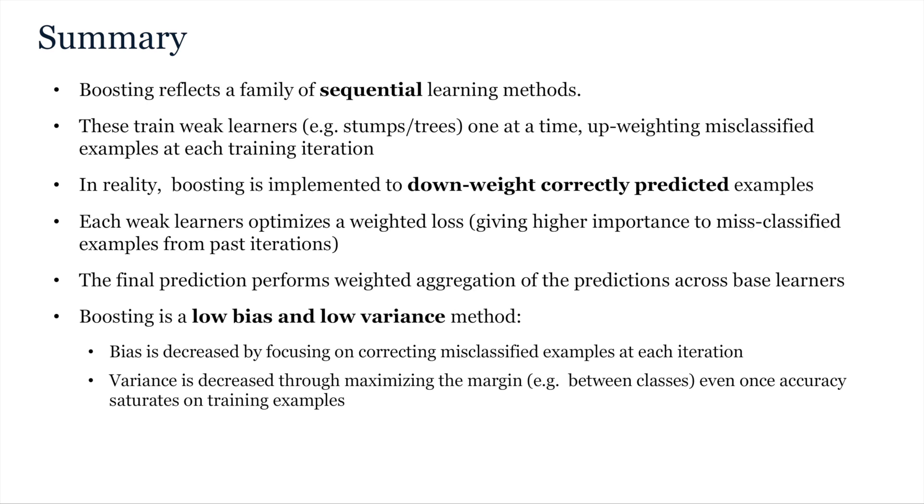So, in conclusion, the important difference between boosting and bagging or forests is that in boosting, weak learners are trained not in parallel, but one after another, where this process acts to reduce model bias by increasingly focusing on misclassified examples at each subsequent iteration. Noting in terms of implementation, misclassified examples are up-weighted indirectly with the algorithm actually implementing reduction of the weights of correctly classified examples. This then results in misclassified examples receiving up-weighted probabilities for estimation of the loss in the next round. The final prediction for each test and trained variable is then estimated through weighted aggregation, giving higher weight to the weak learners in the ensemble which perform best. Collectively then, this works to reduce bias and variance, where bias is decreased by focusing on correcting misclassified examples at each iteration, and variance is decreased by maximizing the margin, even once accuracy saturates on the training examples.